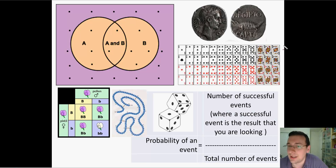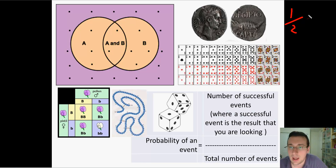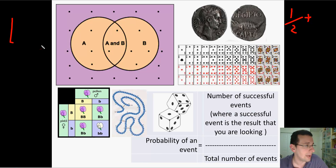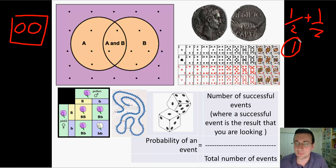What are the chances of getting either heads or tails? The chance of getting heads is one-half, and the chance of getting tails is also one-half. Since we're using OR, and these are mutually exclusive events — it's impossible to get both at the same time — we add them: one-half plus one-half equals one. So you will always get one or the other.